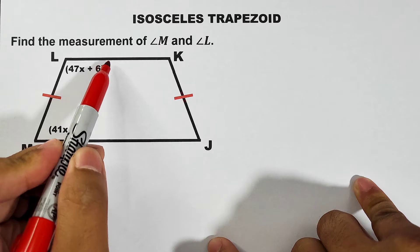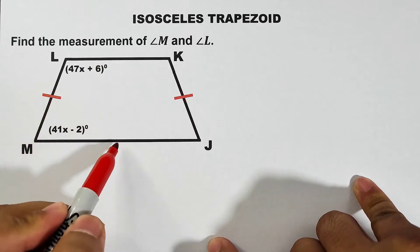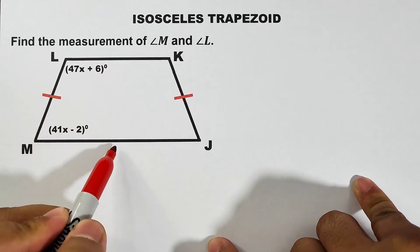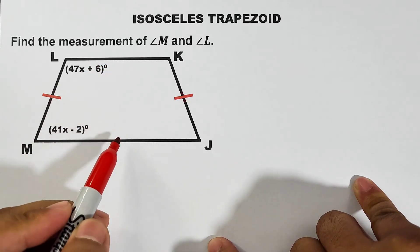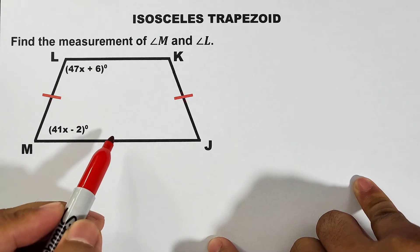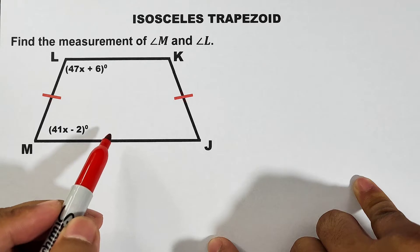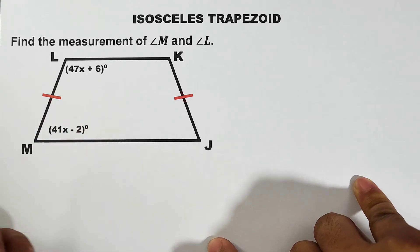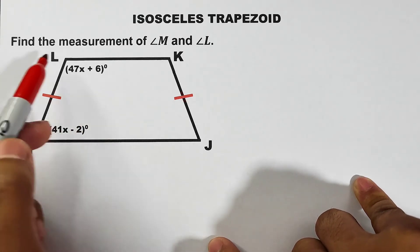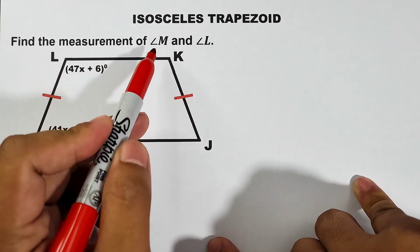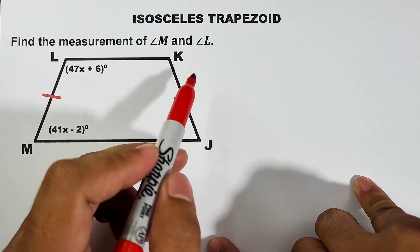This one is your upper base and this is the lower base. The upper base and the lower base are the parallel sides. So the question here: find the measurement of angle M and angle L.